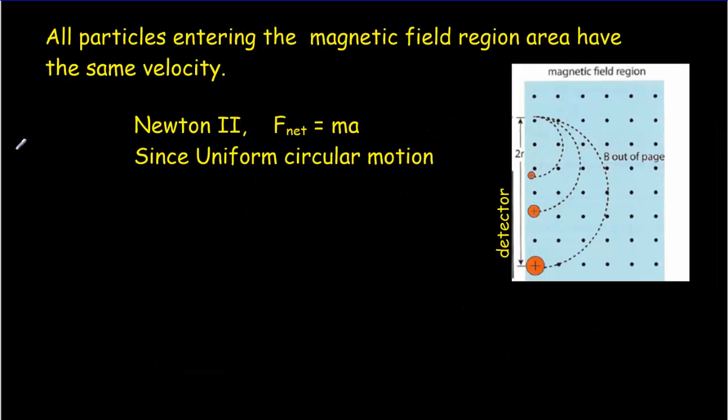Now these ions that all now have the same speed enter a uniform magnetic field region, which of course causes a uniform circular motion for those ions. And we know the only force that's acting is that magnetic force QVB and that has to equal the net force for uniform circular motion, which is that MV squared over R.